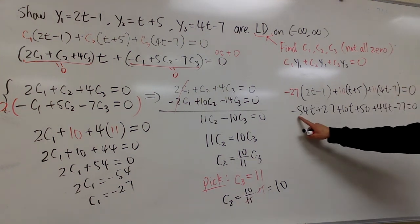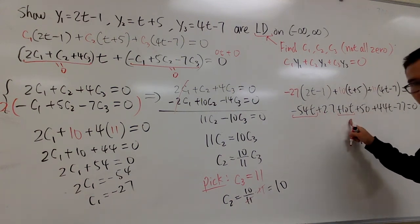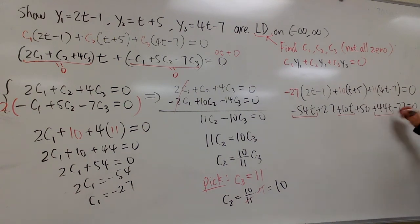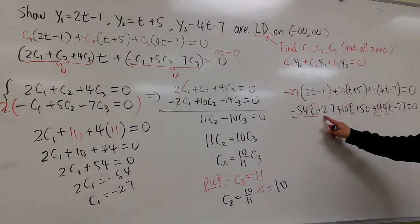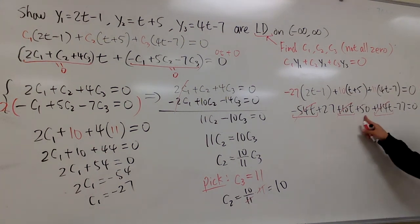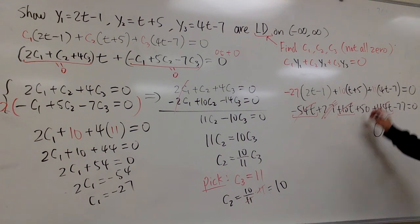Okay, check this out. Negative 54t plus 10t is together negative 44t. But you add plus the 44t right here, so guess what? This, this, that, all cancel out. And moreover, 27 plus 50 is 77. 77 minus 77, guess what? All together, we just have 0, because this right here cancel out with this. All together, 0 is equal to 0. So checks.